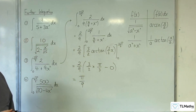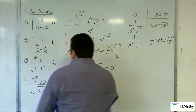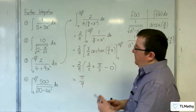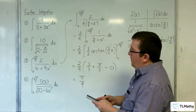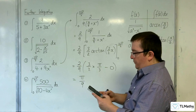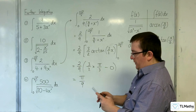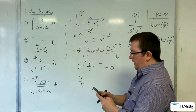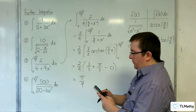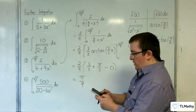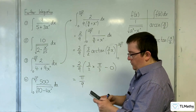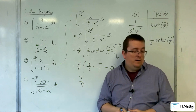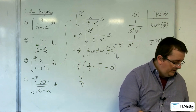Pi over 9 is our answer. Let's do a quick check on our calculator using the integral button: 2 over 4 plus 9x squared between 0 and 2 root 3 over 3. And we get pi over 9, or one ninth pi. So that's all good.